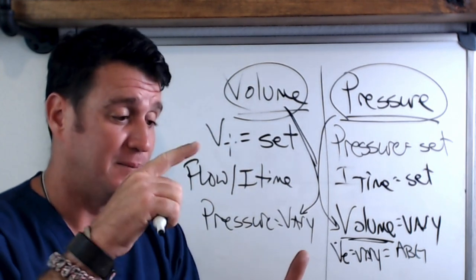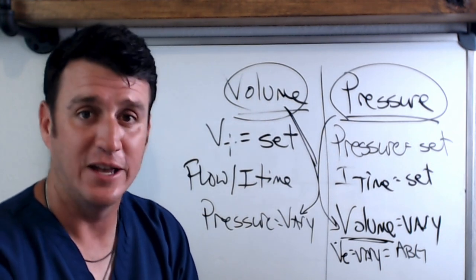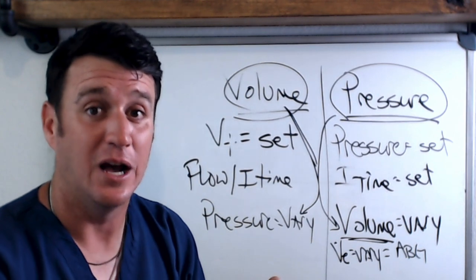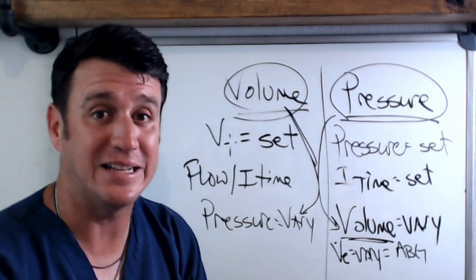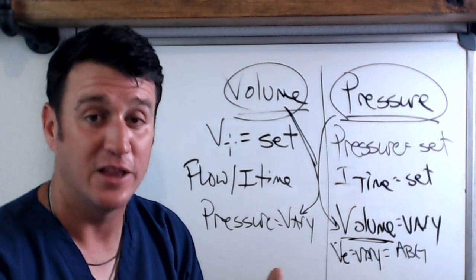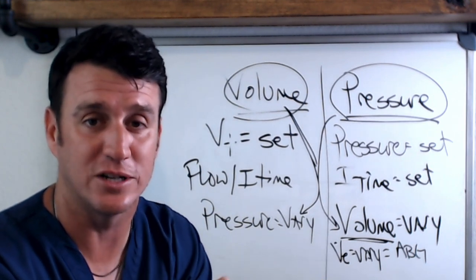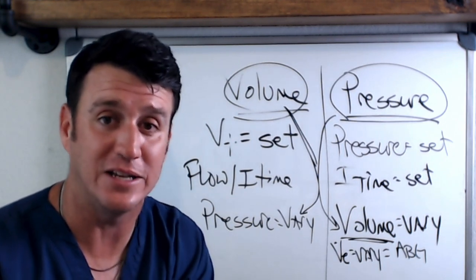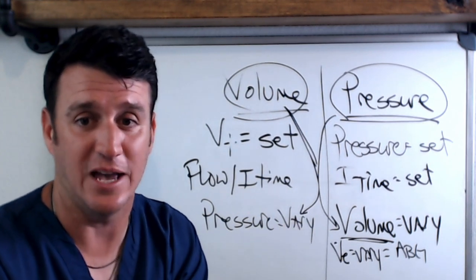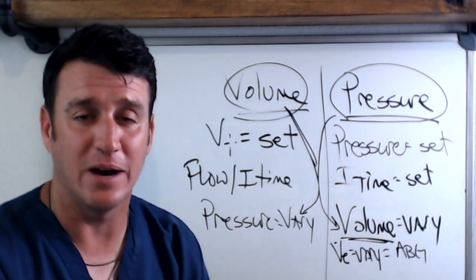Let me recap: cycle is the variable that ends inspiration. Trigger is the variable that begins inspiration — it can be time-triggered on the vent side, or patient-triggered via pressure, flow, or volume. Limits are things that will not be exceeded during the inspiratory phase. In volume control, tidal volume is set and pressure will vary. In pressure control, pressure is set and volume will vary, which means your ABGs might also vary.